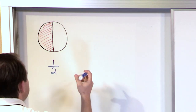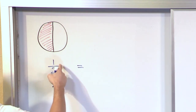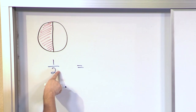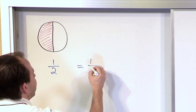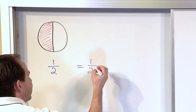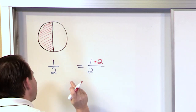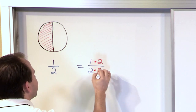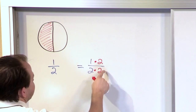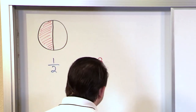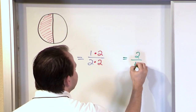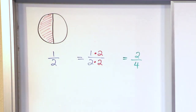Now let me show you something. I can put an equal sign here. I told you I can take the top and bottom of this fraction and multiply it by anything I want, as long as I do it to the top and also to the bottom. So I can rewrite my one half and multiply the top of this fraction by the number two. But if I do that, I have to also multiply the bottom of my fraction by two as well.